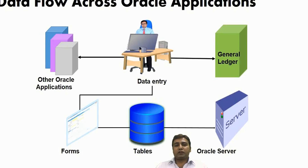Information transfers from one application to another in EBS. Information or data stored on the General Ledger — a central repository of accounting information of a company — or on Oracle applications like HRM, Finance, Accounting, and Project Management can be shared by users. The user enters data in an Oracle form, a document that opens within Oracle applications, and the data is stored in tables. A table is a basic unit of data storage in an Oracle database, where data is stored in rows and columns using table names.